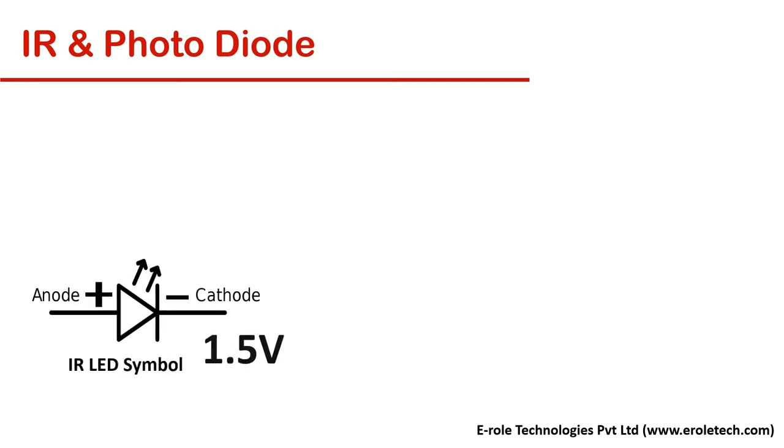IR LED or IR diodes are another form of diode which emit infrared light. 1.5 volt is its turn-on voltage. IR LED is also called IR transmitter.